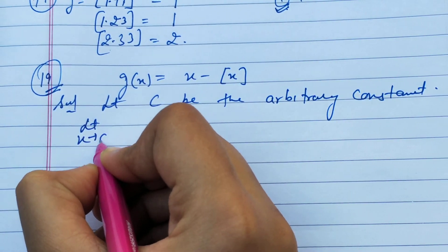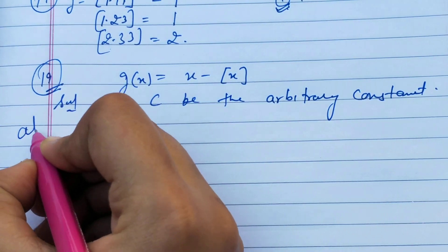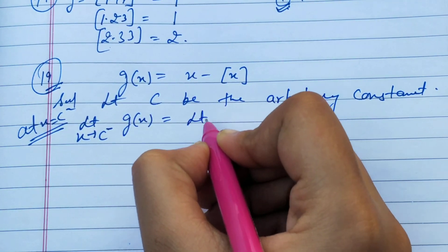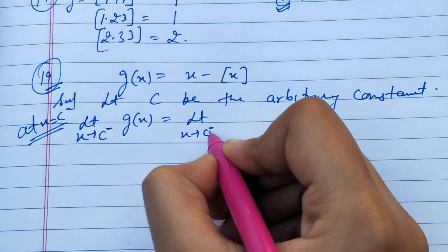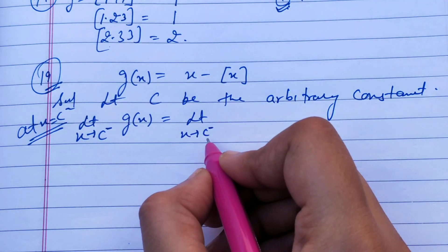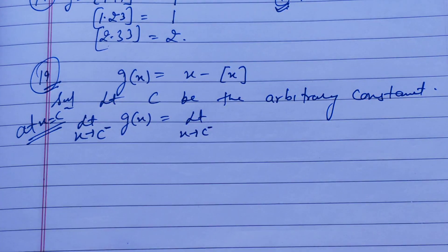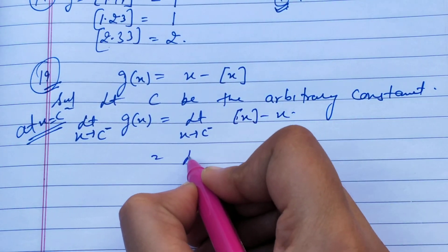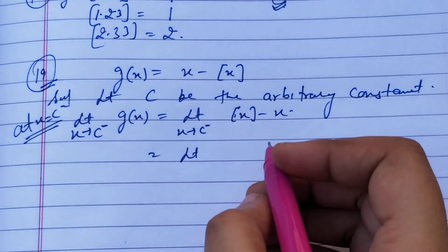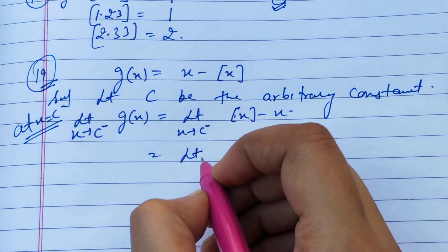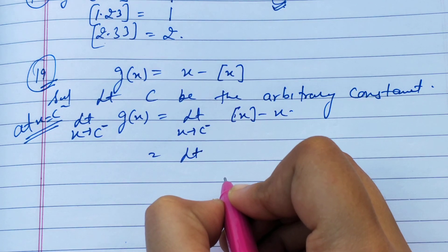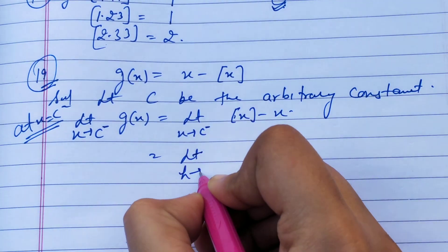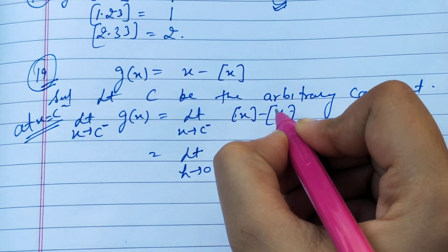Now for the left-hand limit, we write: limit x tends to c minus of g of x. Here c minus means we are approaching from the left, so x is not exactly c. We substitute x equals c minus h, where h is a very small value like 0.00001. So we write h tends to 0.